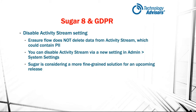Another setting SUGAR has added with SUGAR-8 is the option to disable the activity stream. This goes back to the idea that the erasure flow does not currently delete data from the activity stream, and the activity stream could contain PII data. The erasure flow does delete PII data from the audit logs but not from the activity stream, at least in the 8.0 release. Therefore, if GDPR compliance is a concern — and it should be if you have any EU citizens in your database — you may need to disable the activity stream through this new setting until SUGAR provides a better solution, which they are considering for an upcoming release.